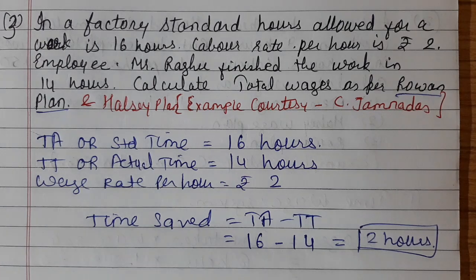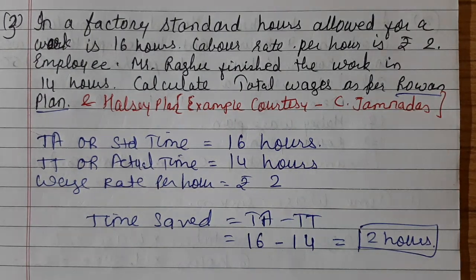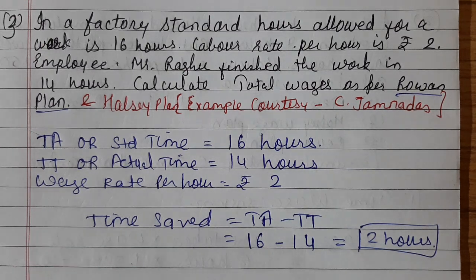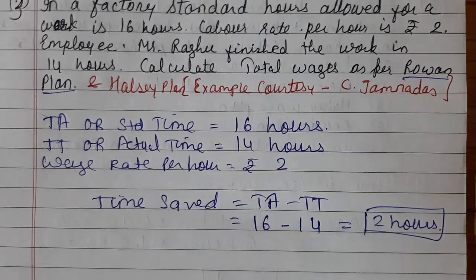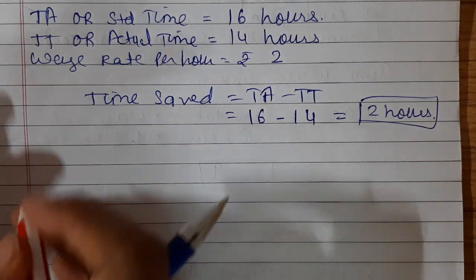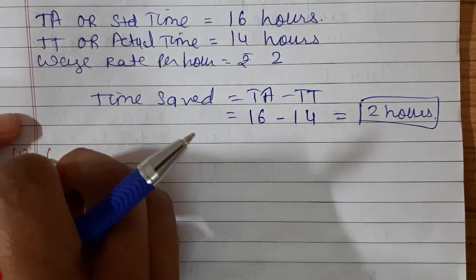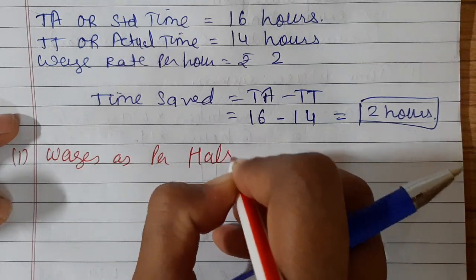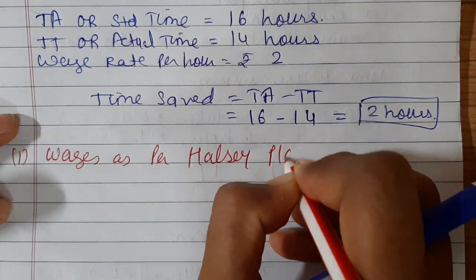The person was given 16 hours to complete the task and actual time is 14 hours, so the task is finished within 14 hours. Wage rate per hour is rupees 2. We need to calculate wages as per Halsey plan as well as Rowan plan. We have calculated the time saved; now we move to wages as per Halsey plan.